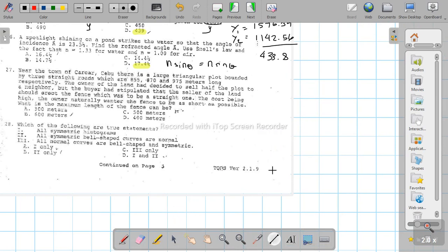So we have a triangle here. The triangle has 855 meters on one side, 870 meters, and 975 meters. The fence needs to divide the land in half.